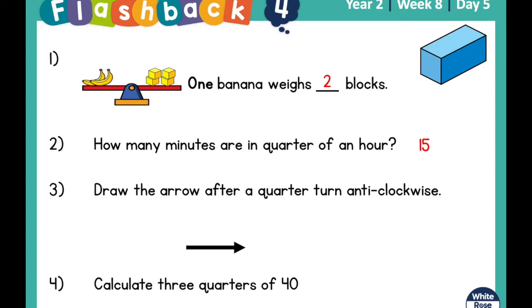Question three: draw the arrow after a quarter turn anti-clockwise — so going in the opposite direction to hands on a clock. And the answer is your arrow would have looked like that.